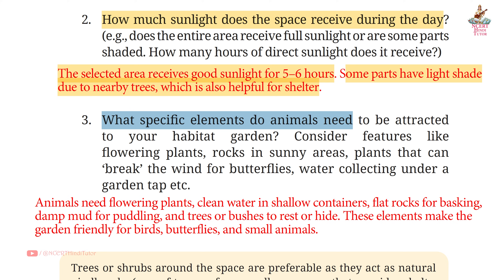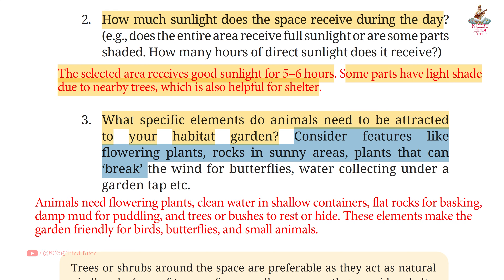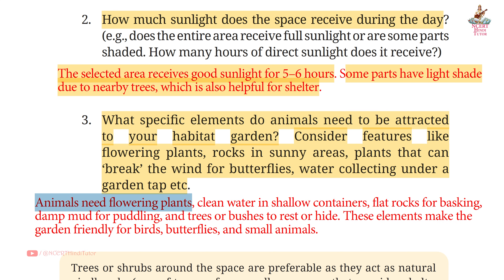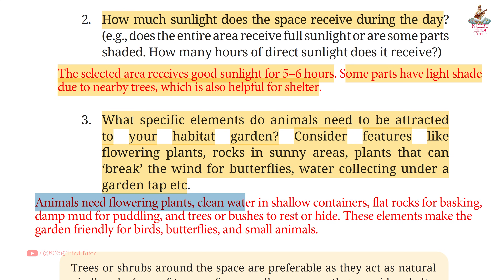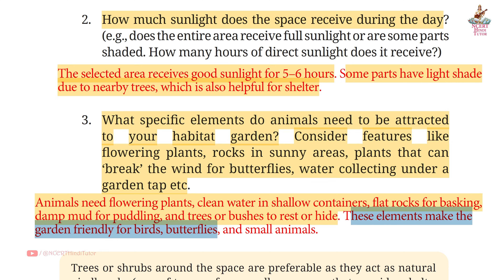Question 3: What specific elements do animals need to be attracted to your habitat garden? Answer: Animals need flowering plants, clean water in shallow containers, flat rocks for basking, damp mud for puddling, and trees or bushes to rest or hide. These elements make the garden friendly for birds, butterflies and small animals.